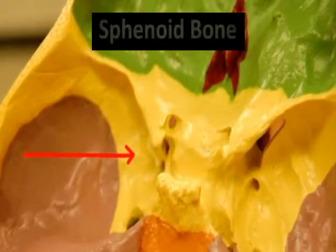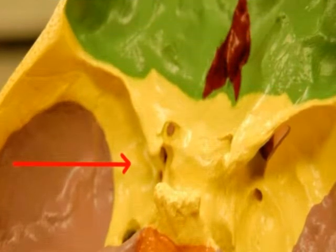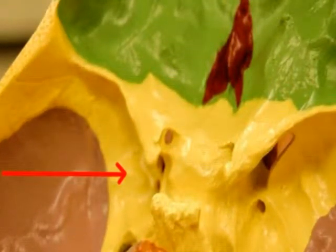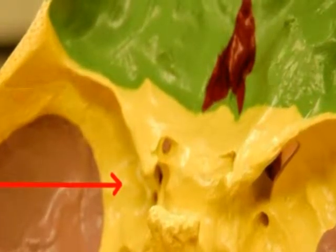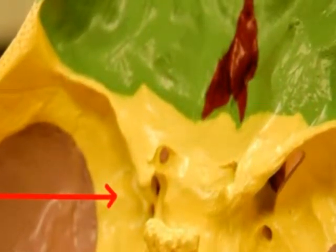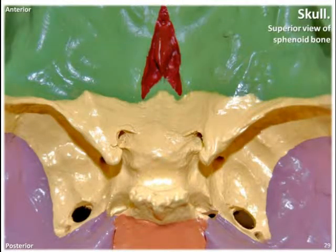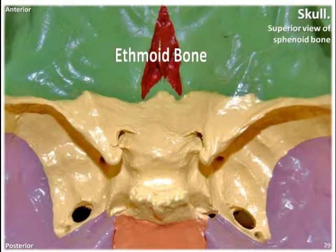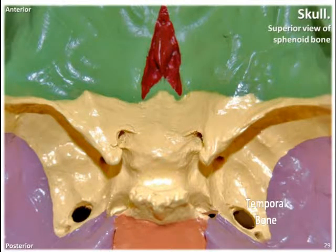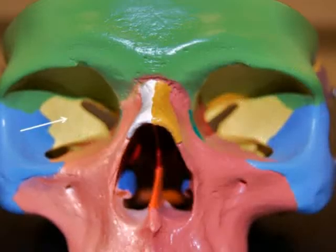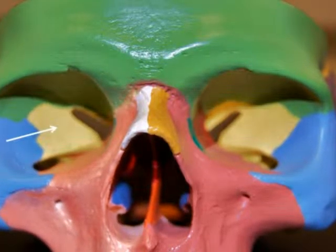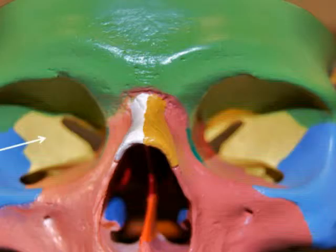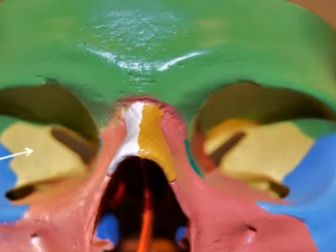Our next cranial bone is the sphenoid bone, located in the middle part of the base of the skull. It's considered to be the major keystone bone of the cranial floor because it joins together with all of the other cranial bones. It joins on its anterior side with the frontal and ethmoid bones, laterally with the temporal bones, and on its posterior side with the occipital bone. It's located just posterior to the nasal cavity and also forms part of the floor, side walls, and rear walls of the orbit of the eye.